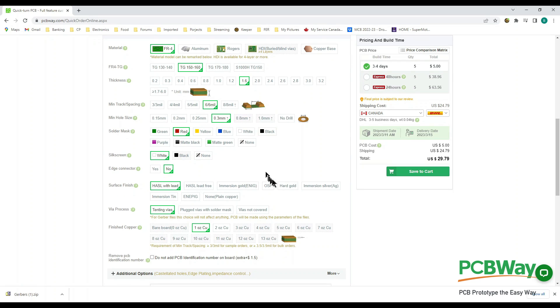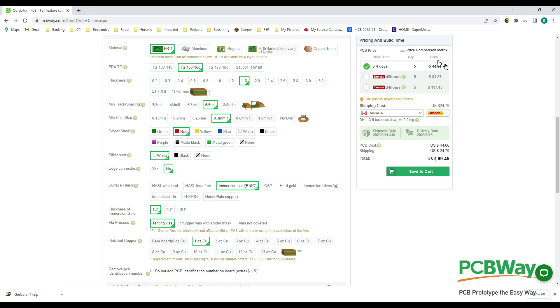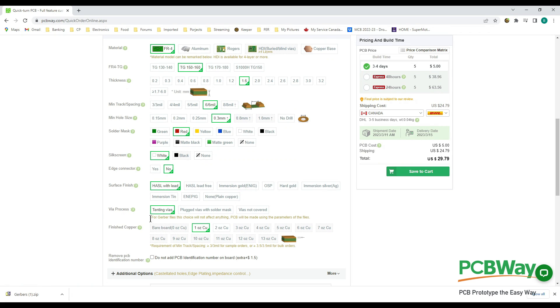You can make little changes here if you want, such as surface finish. The standard is hot air solder leveling with lead-based solder. Immersion Gold is not too expensive and I've done boards in Immersion Gold too where I wanted something that I don't want the board to tarnish. Via process: you want your vias tented, plugged, or not covered.